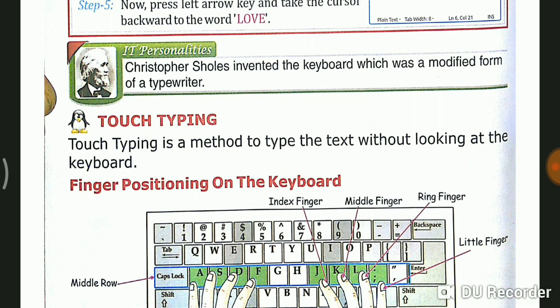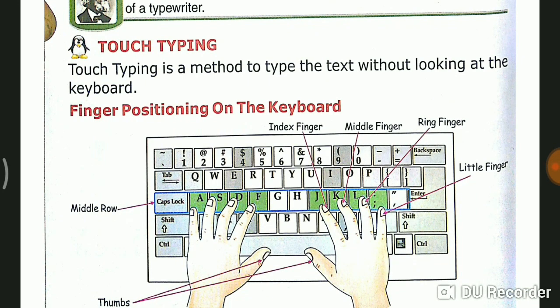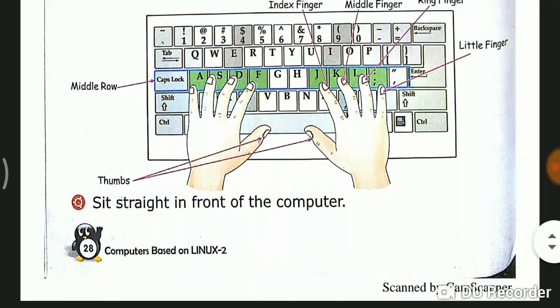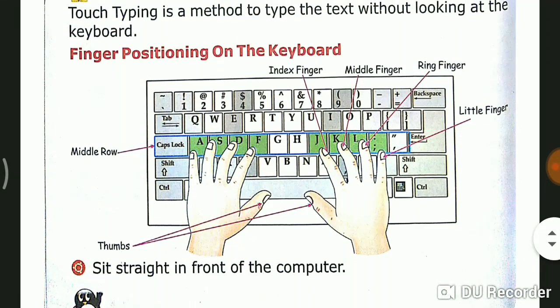Touch typing. Touch typing is a method to type the text without looking at the keyboard. The positioning of our fingers is very important. Let's see the fingers. We keep both hands like this in the photo: index finger, middle finger, and ring finger are placed on J, K, L.